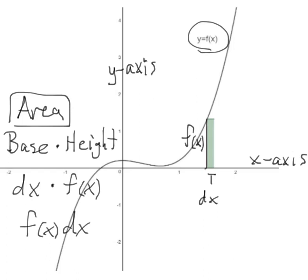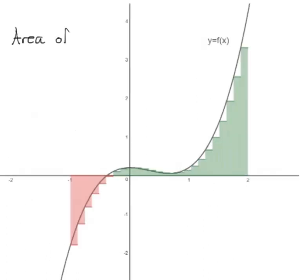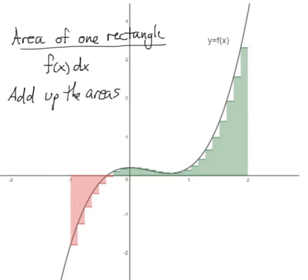Here's the power of what we just did. Once you write the area of one rectangle in complete generality, meaning you're using only variables, then you're able to write down a formula for the areas of all those insanely thin rectangles with virtually no extra work.